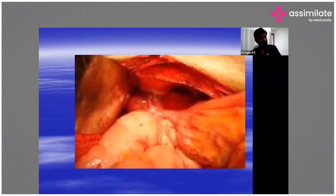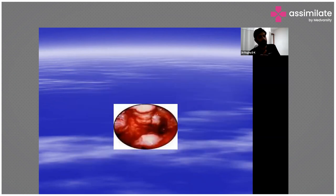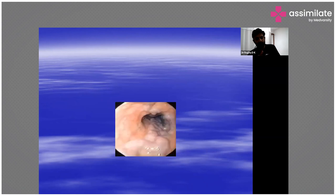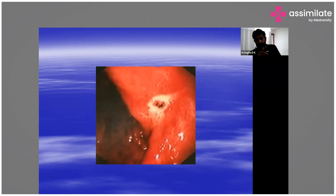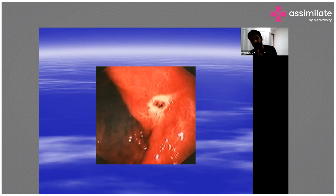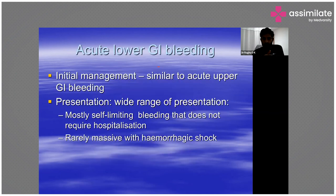Perforation can sometimes present with bleeding — you can see air under the diaphragm from perforations presenting with GI bleeding. This is another picture of a varix, and finally this is an ulcer with a red spot showing signs of recent bleeding — a Forest grade 2 ulcer. That concludes the discussion on upper gastrointestinal bleeding.